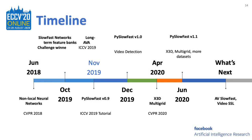Moving to November, we first released the PySlowFast codebase at the ICCV 2019 tutorial on visual recognition for image, video, and 3D, with version number 0.9. Then, in December of the same year, we released version 1.0 with the video detection part implemented. At the same time, we also released the AVA challenge winning model zoo to share with the community.